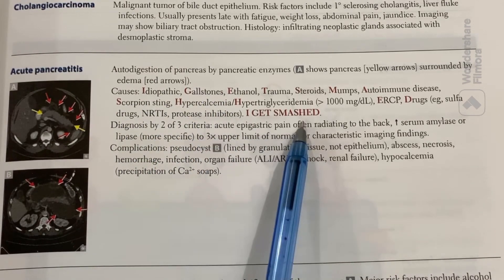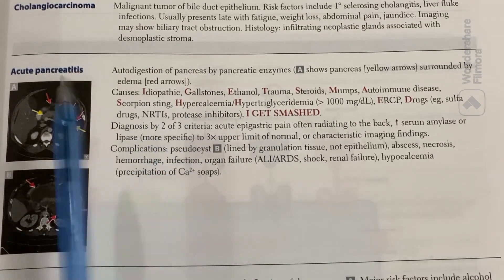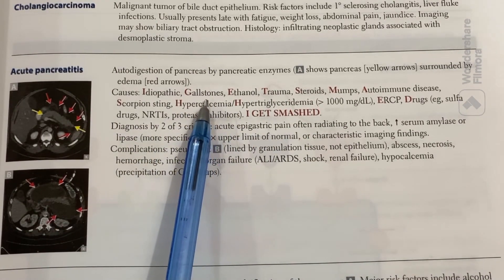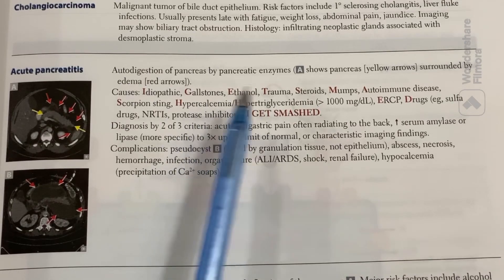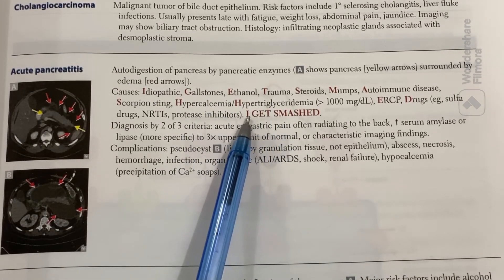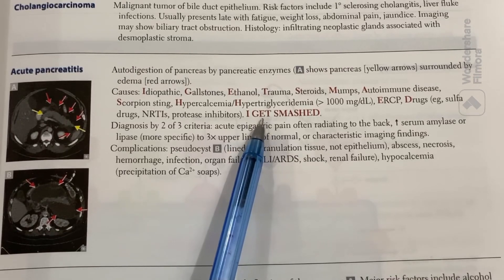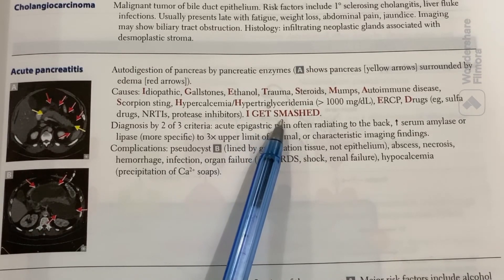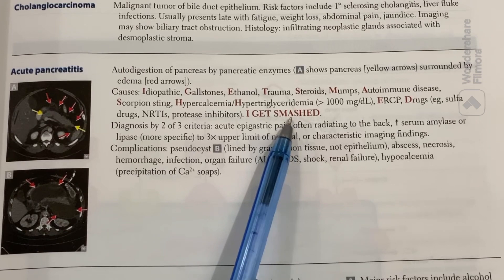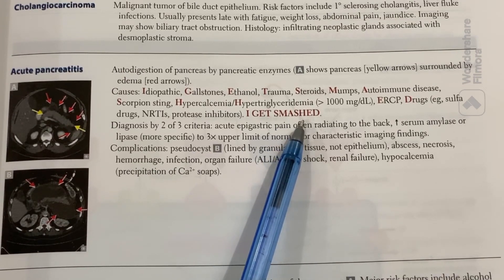The causes can be remembered using the mnemonic 'I GET SMASHED': I for Idiopathic, G for Gallstones (the second most common cause), E for Ethanol, T for Trauma, S for Steroids, M for Mumps, and A for Autoimmune diseases.